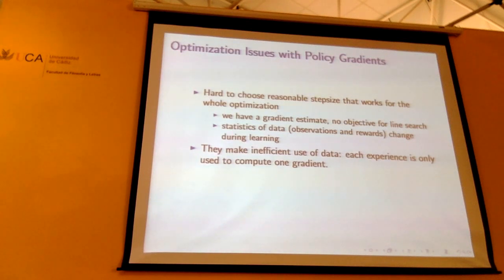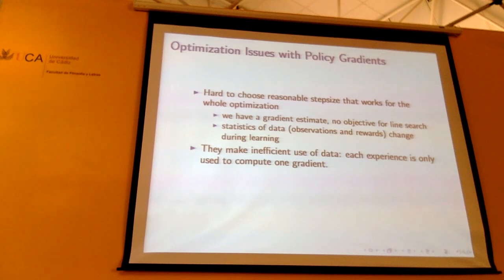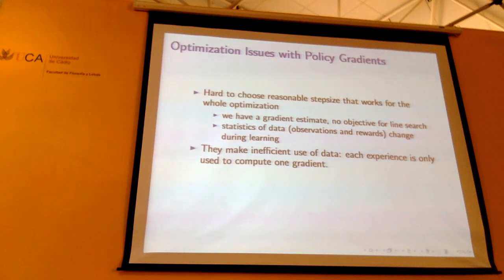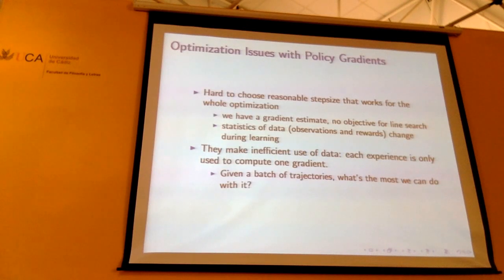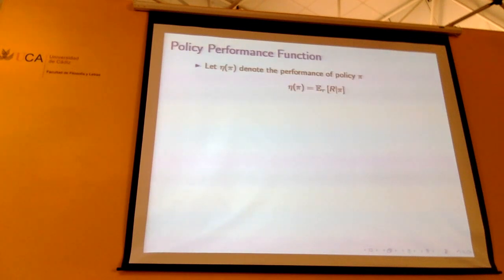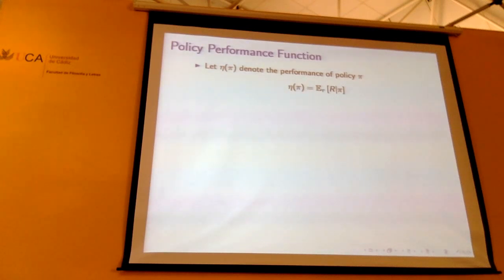One might ask: given a bunch of collected data, what's the best we can possibly do with it? Can we write down some optimization problem such that if you solve it, that will improve your policy? It's nice when you can write down an objective which you're trying to optimize at all times, because then you can separate the two problems of optimizing your objective properly and estimating the proper objective. Right now we just have a gradient estimator.